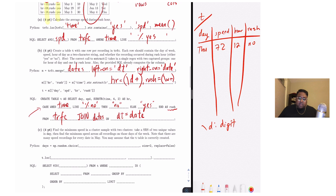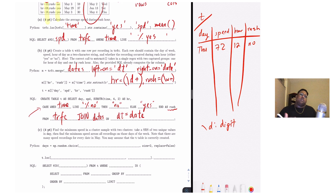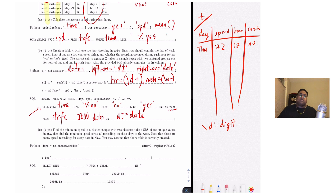In part C, we want to find the minimum speed in a cluster sample with two clusters. First, we take a simple random sample of two unique day values, then find the minimum speed across all recordings on those days of the week. So we pick two days — say Tuesday and Saturday — and take the minimum speed from all recordings on those two days.